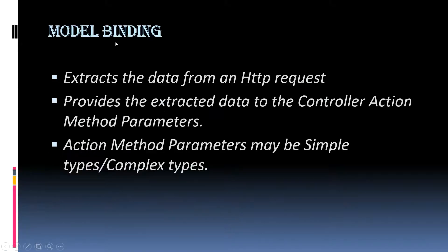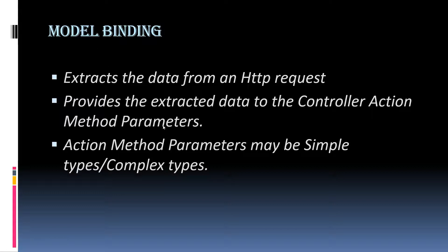In our previous video, we have discussed what is model binding and how it extracts the data from the HTTP request and provides them to the controller action method parameters when it is a simple type such as integer or string. Now let us see how model binding occurs in ASP.NET Core MVC application with complex types.